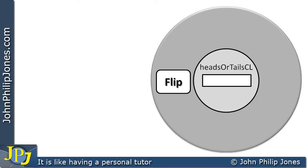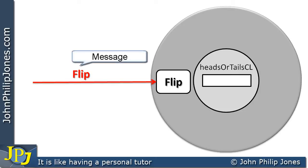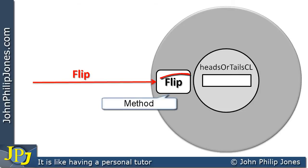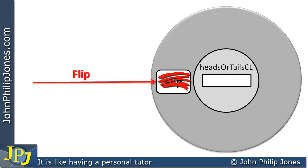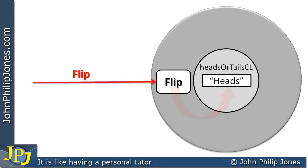When this is in the execution space, we will send it a message from an appropriate object — maybe a form object, for example. When we do that, the flip method will then execute, and what it will do is put in the center of the object a string "heads".